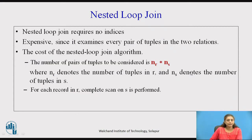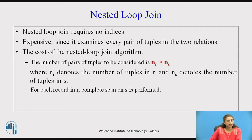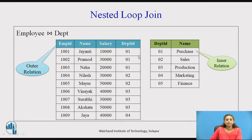Nested loop join does not require any index because we are going sequentially from the first tuple to the last tuple. It is very expensive because it examines every tuple in the two relations. If n_r is the number of tuples in R and n_s in S, the total number of comparisons is n_r × n_s. In the previous example with 9 records and 5 records, total comparisons = 9 × 5 = 45.